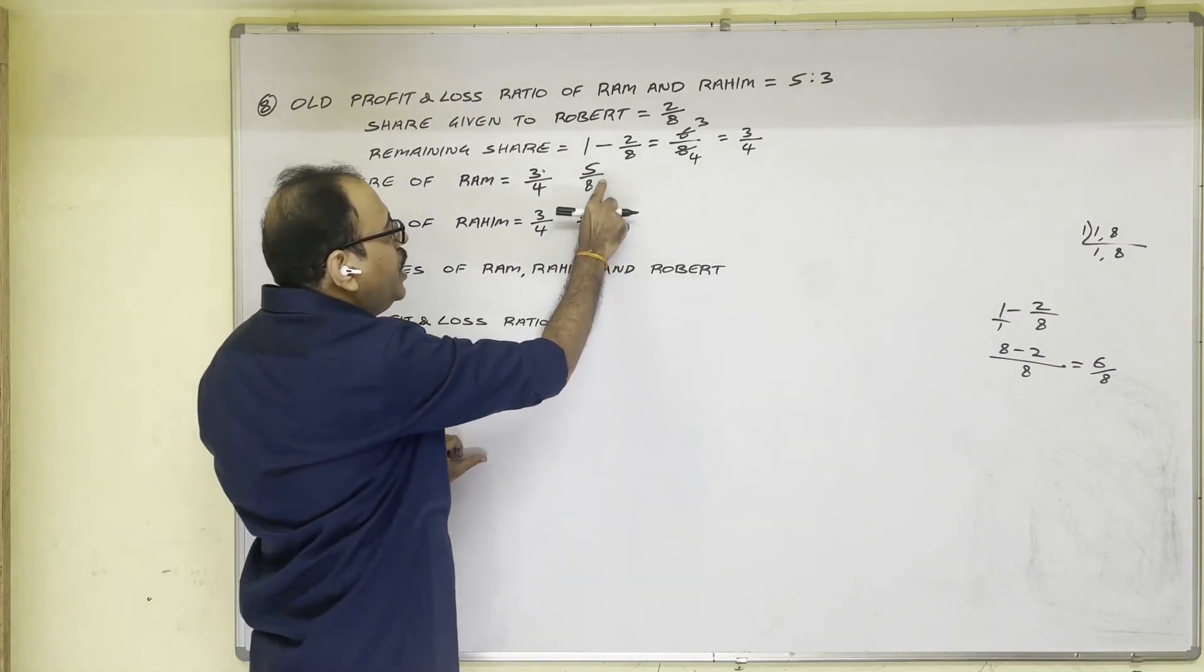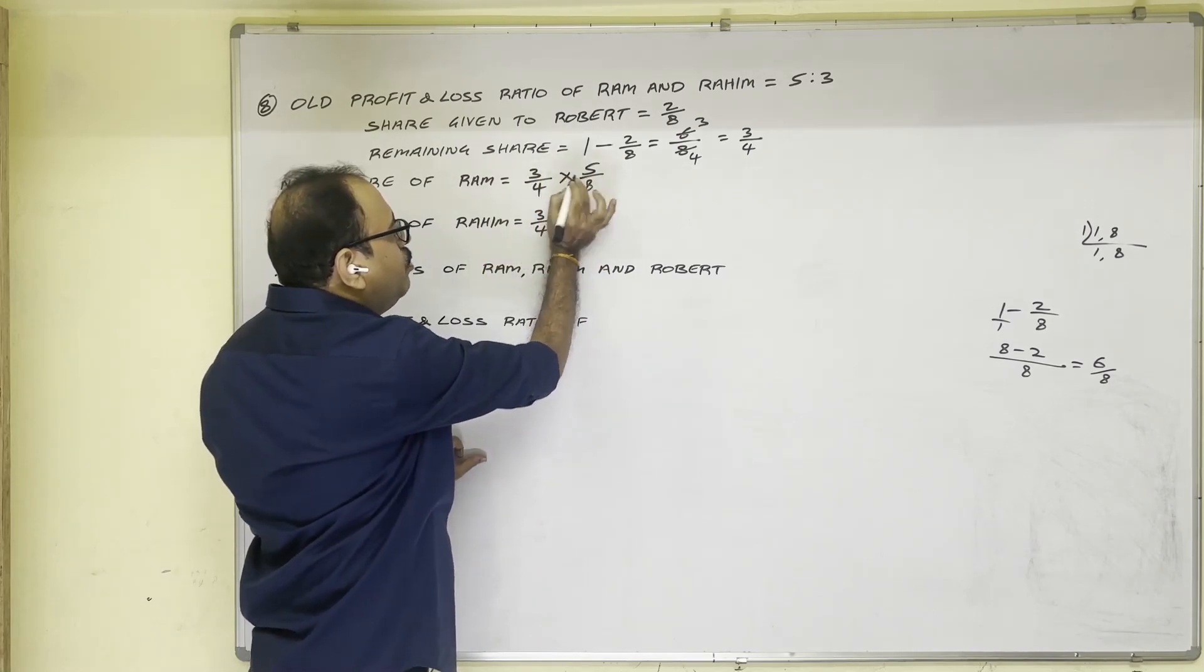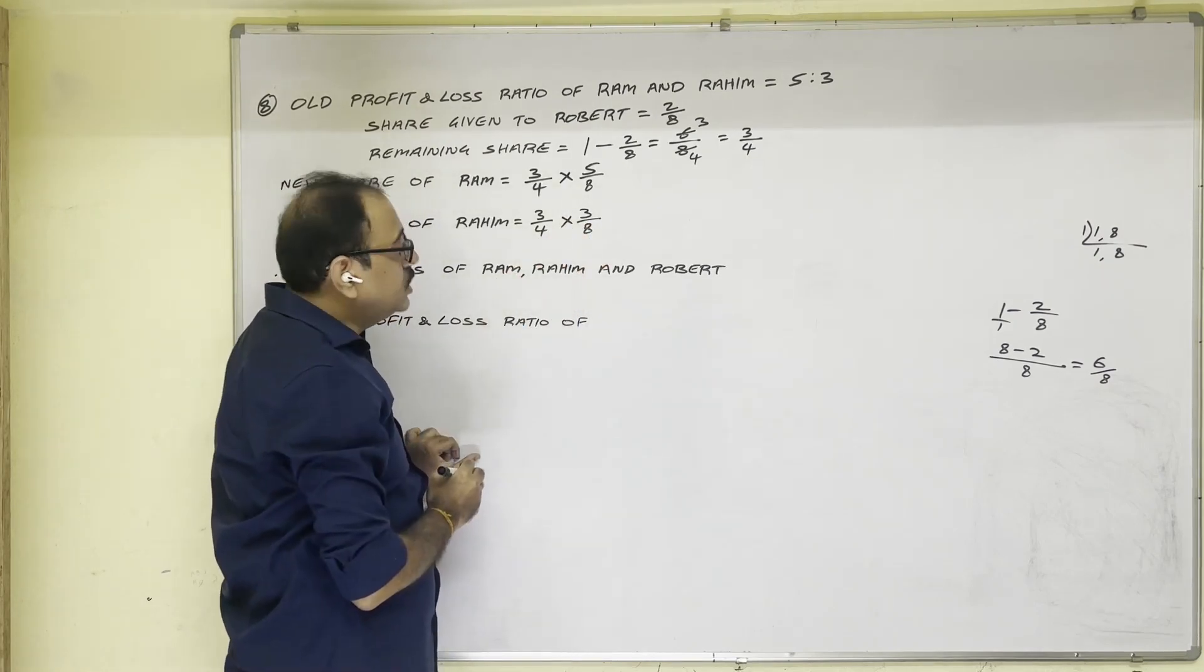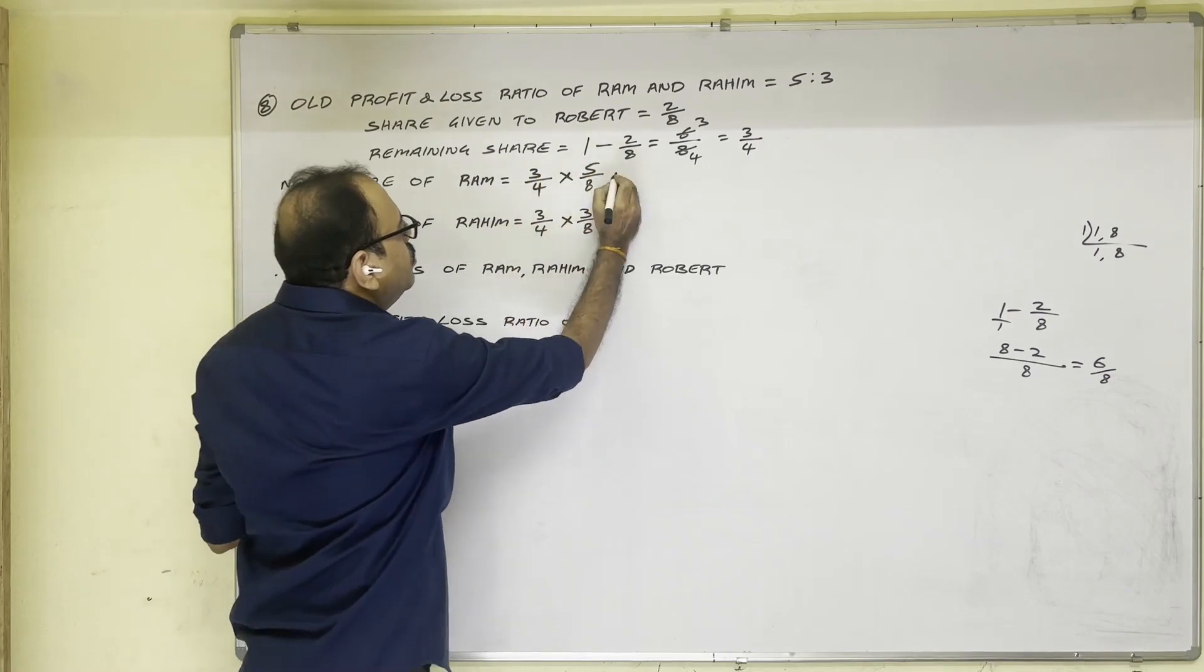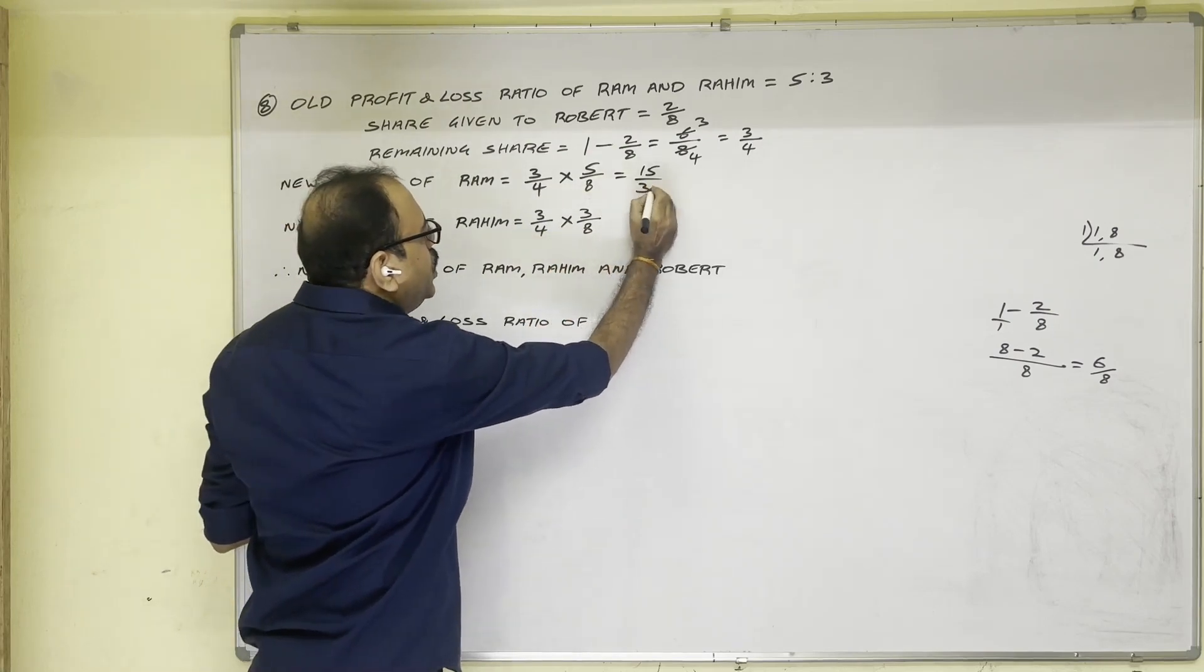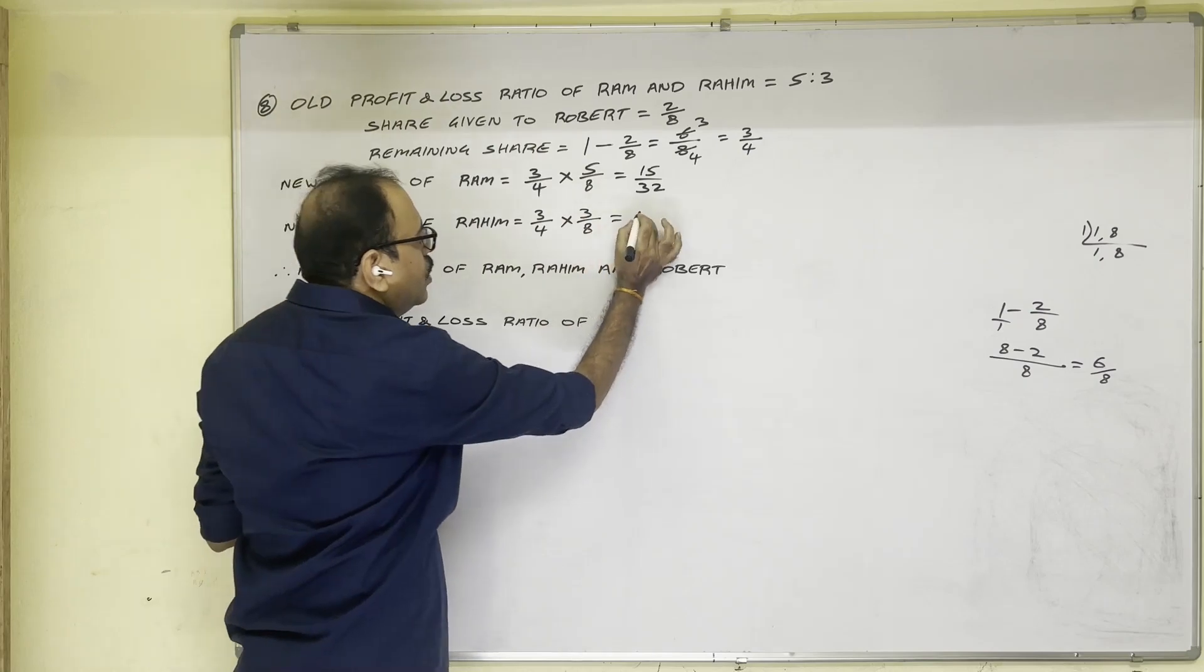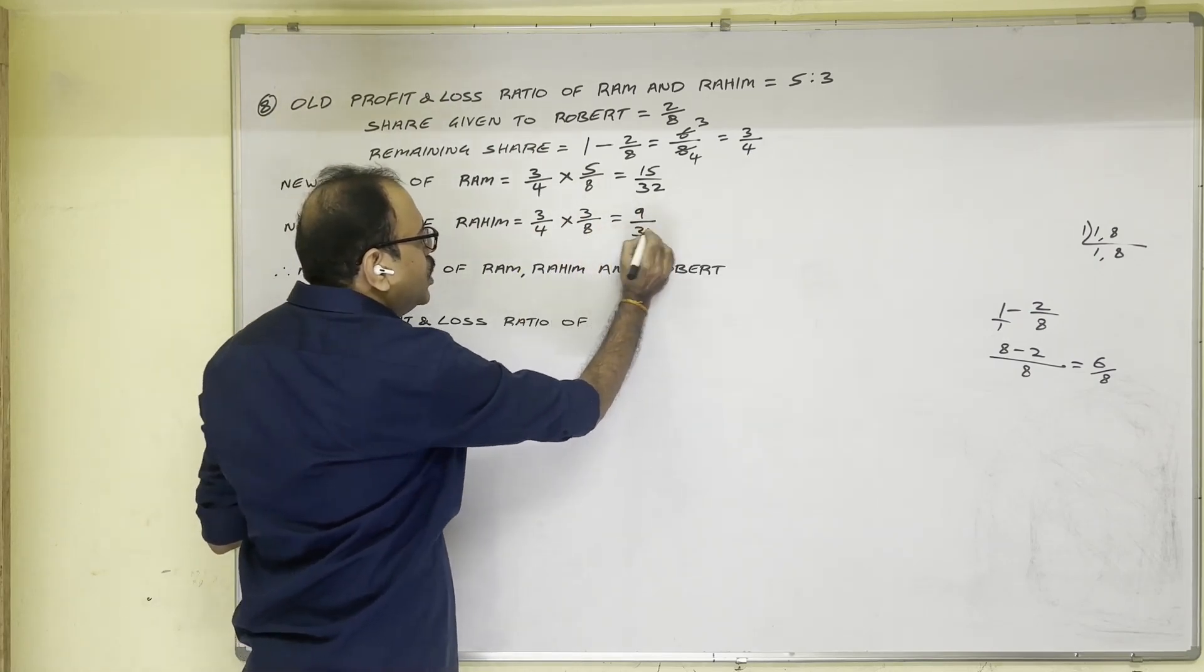So 5/8th of 3/4th, how to calculate? You have to multiply these two. Similarly here also, multiply these two fractions. So 3 fives are 15, divided by 4 eights are 32. Here 3 threes are 9, divided by 4 eights are 32.